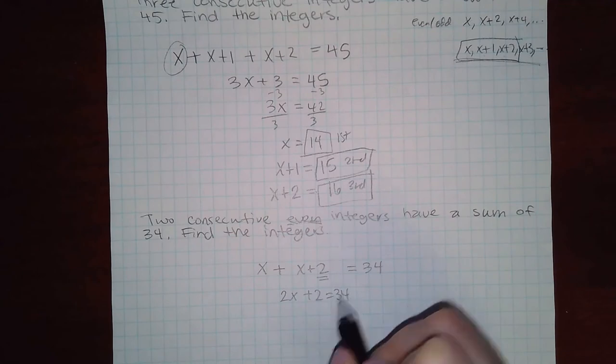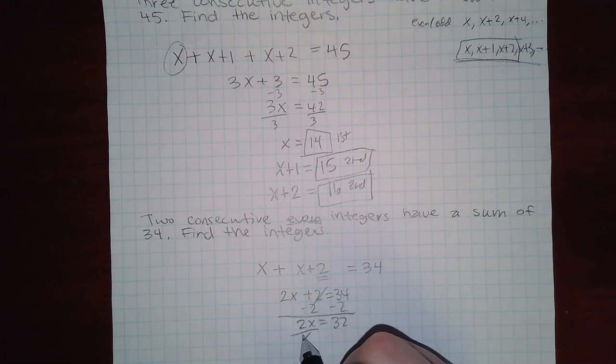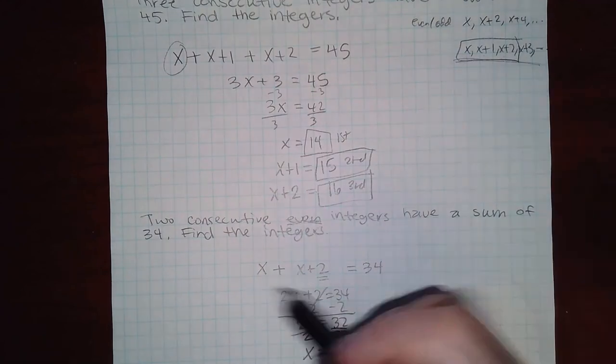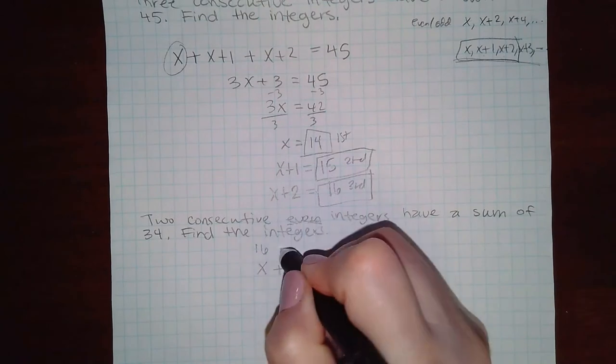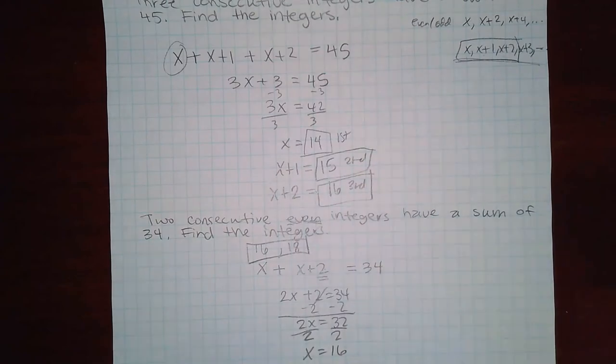If I start to solve for x we get 16. So the first number is 16 and then 16 plus 2 is 18. So the two numbers are 16 and 18.